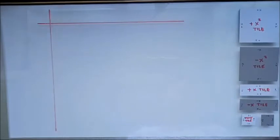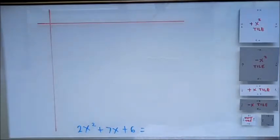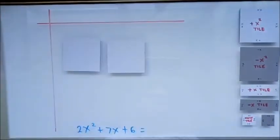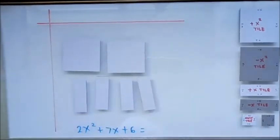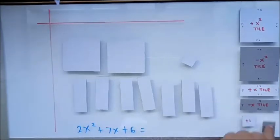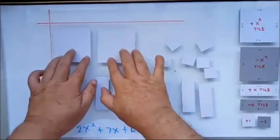Let's start. For example, we will factor 2x² + 7x + 6. We will collect 2 positive x-squared tiles, then 7 positive x tiles — 1, 2, 3, 4, 5, 6, 7 — then we have 6 positive unit tiles.